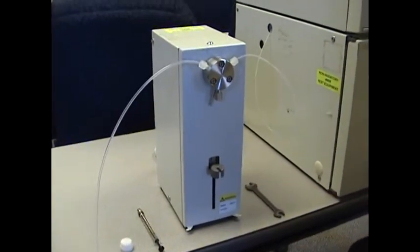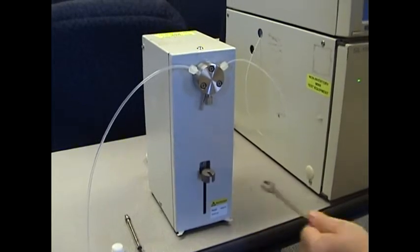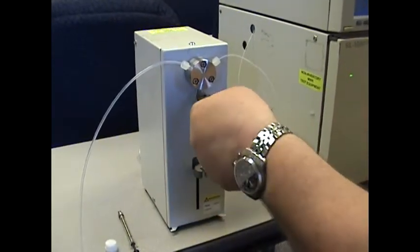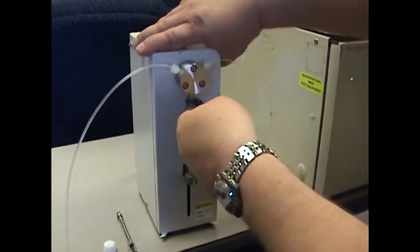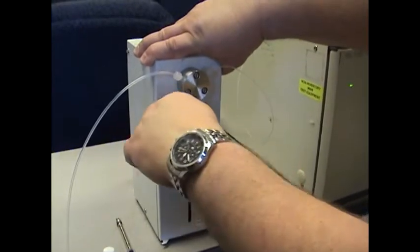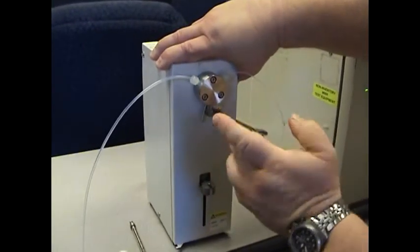Sometimes you can have issues with the nut right below the valve. Make sure that that is tight. You can use a metric wrench to tighten that up. You do not need to completely crank on it, but it does need to be firm. If you do have leaking, tighten it. If it's not, you can leave it be.